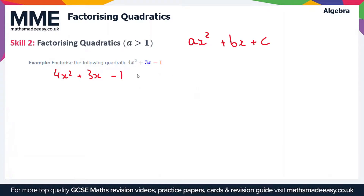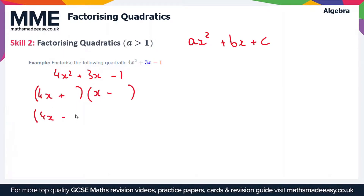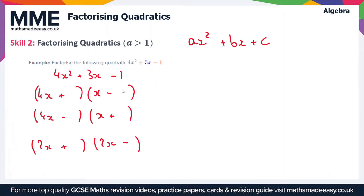As usual we're looking for two numbers which multiply together to give c when we have our double brackets. But there are several combinations we could try, because we also need to get a 4x squared when we multiply out the brackets. So we could have (4x + something)(x - something), (4x - something)(x + something), or (2x + something)(2x - something). Often when a is greater than 1 it just takes a bit of trial and error to work out which is the correct answer.